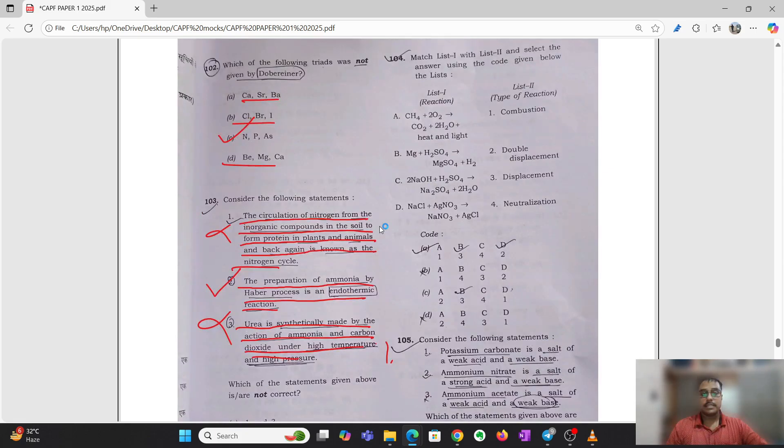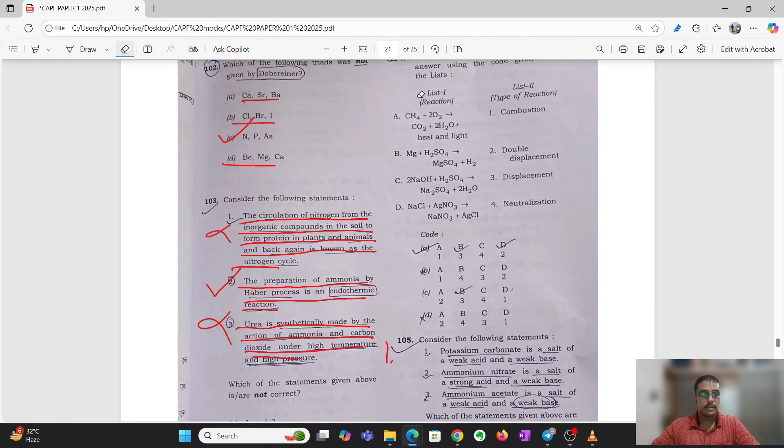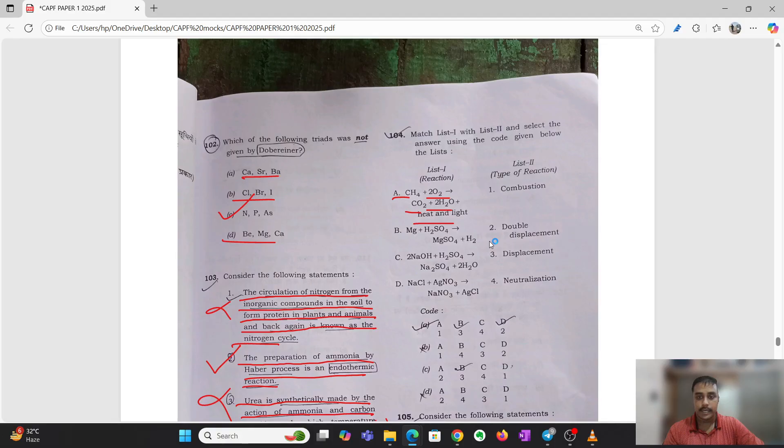Match the following: CH4 plus 2O2 gives rise to CO2, 2H2O, heat and light, so this is combustion, so A1. Mg plus H2SO4 gives rise to MgSO4 plus H2, this is displacement B3. 2NaOH plus H2SO4 gives rise to Na2SO4 plus H2O, that is neutralization C3. NaCl plus AgNO3 gives rise to NaNO3 plus AgCl, that is double displacement, sorry D2.